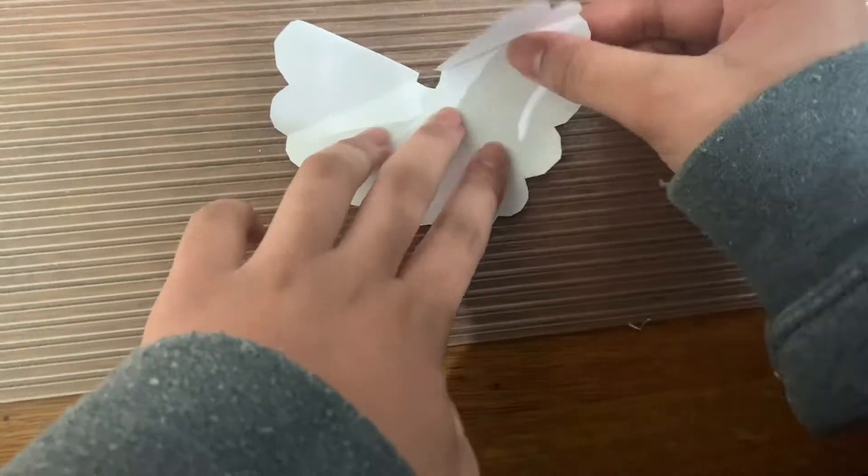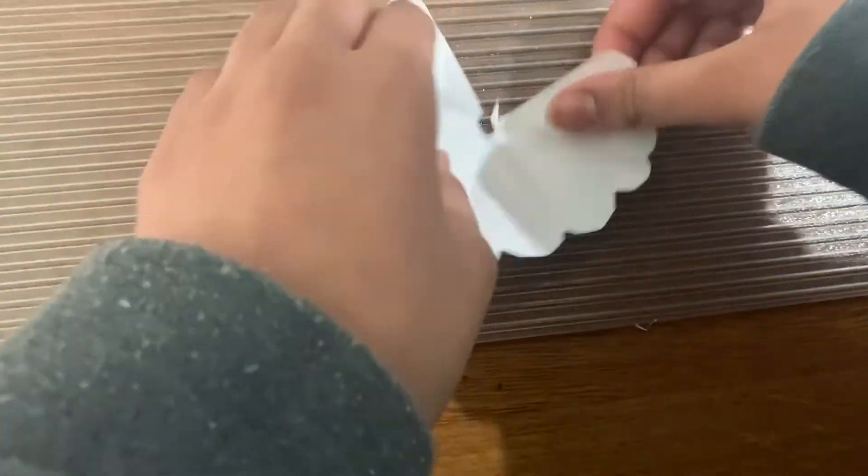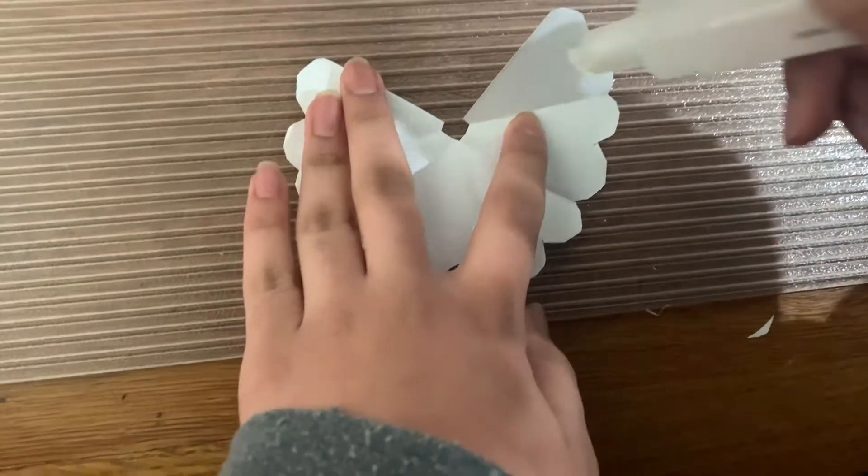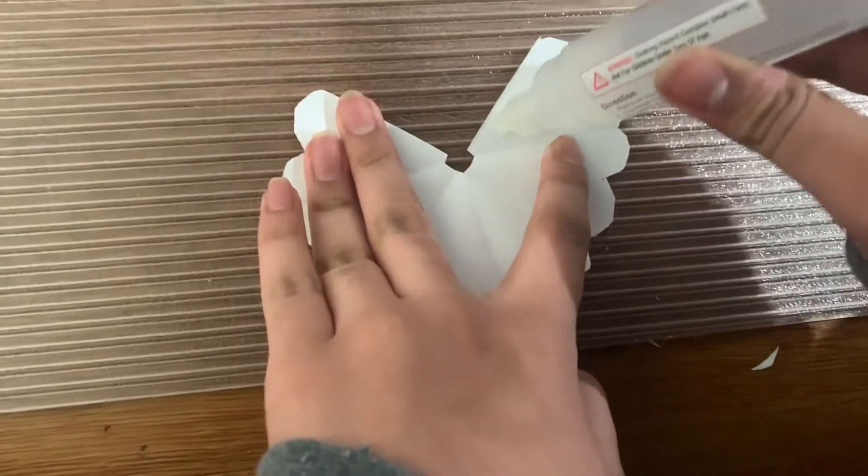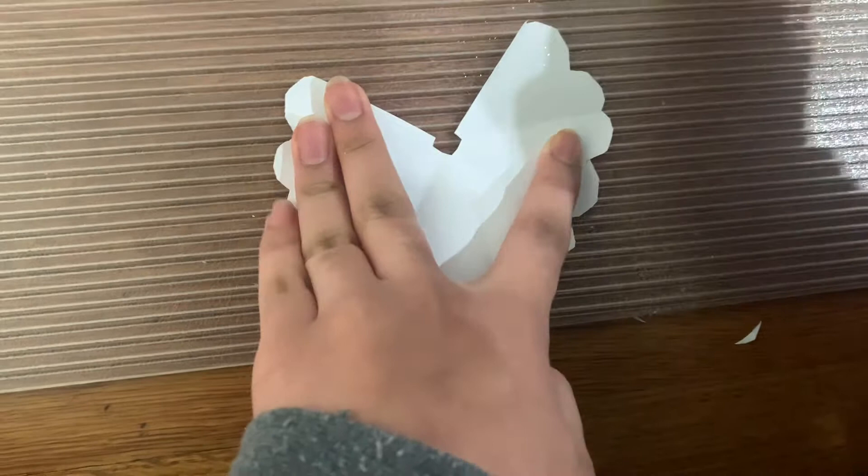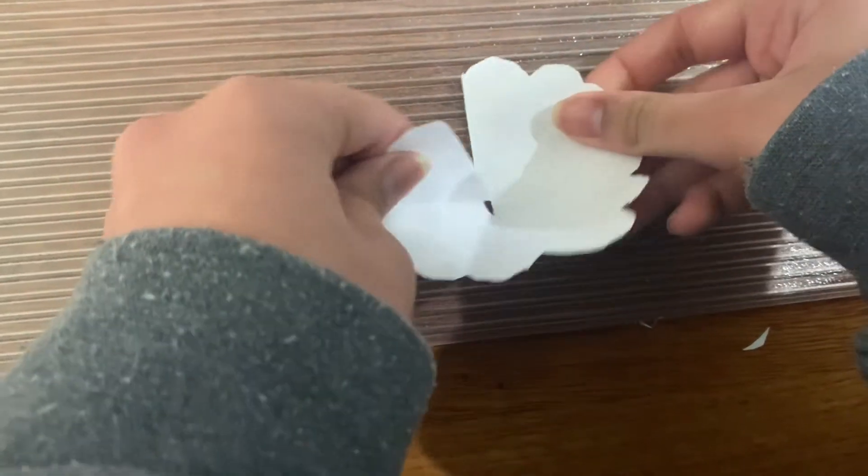We're doing the same thing with all of these. We're going to fold their creases inward so they're all in one direction. We're going to take the glue, put it on one of the edge petals, and then we're going to fold the other petal over and squish them together.